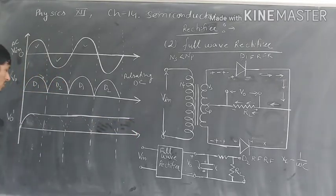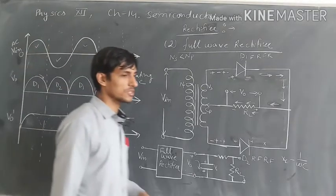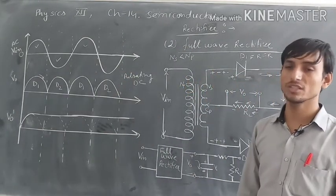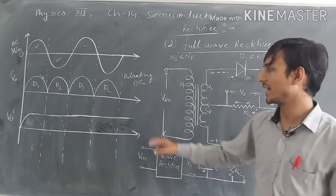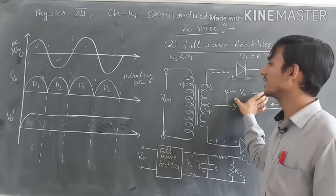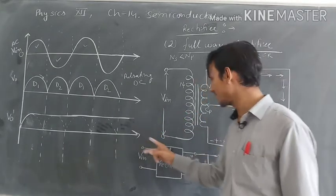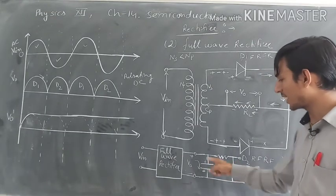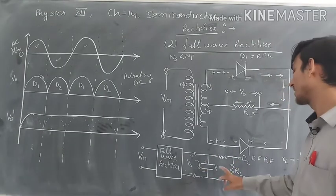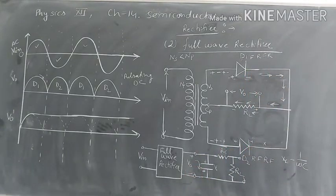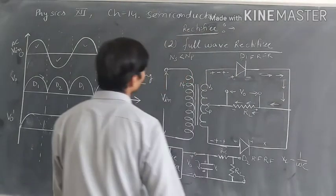So this third diagram is the output of the filter. The first waveform is the input to the transformer — the complete AC input. The second waveform is the output of pulsating DC, i.e., the output across RL. And the third one is the output from our filter circuit. This is your filter circuit with resistance RL connected. So this is your complete full wave rectifier.